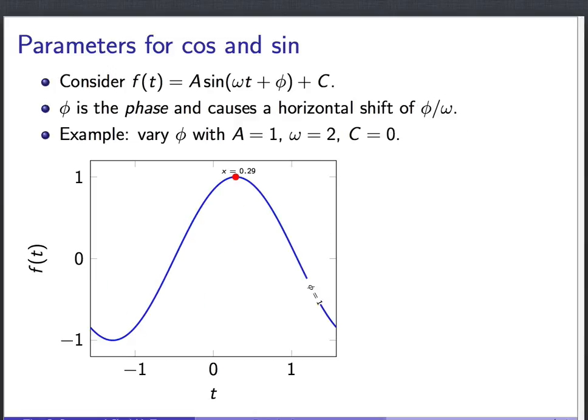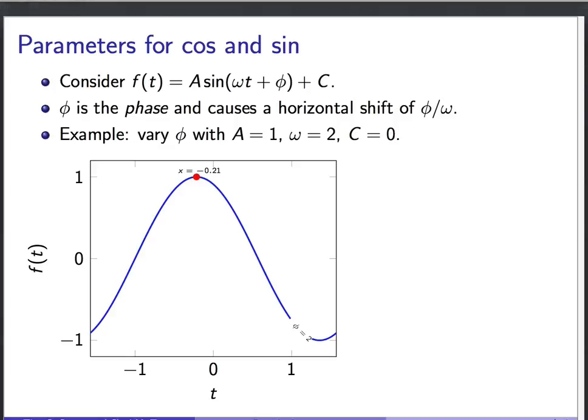And what I'm going to do now is start changing φ. So if I change φ to be one, I claim that we should have a horizontal shift of one divided by ω. Well, ω is two here. That should be a horizontal shift of a half. And indeed, that peak moved leftwards from 0.79, that was around here, to 0.29, where it is here. If I change φ even more, I can increase φ by another unit to be φ equals two. And this peak moves to the left another half unit, another 0.5 to the left.